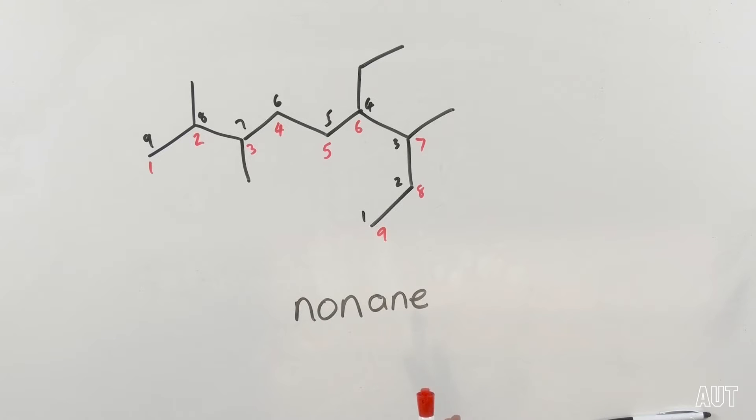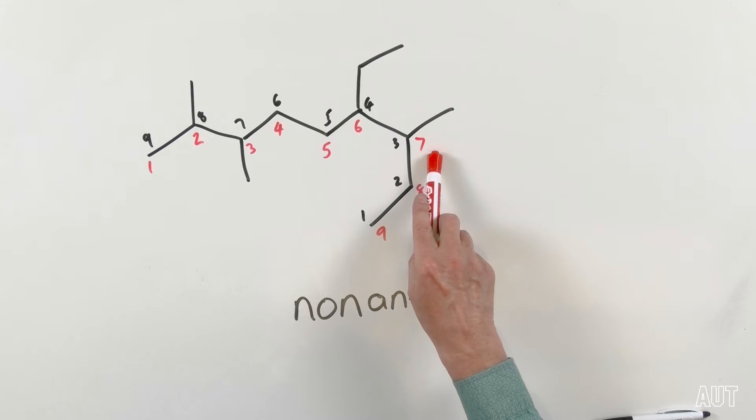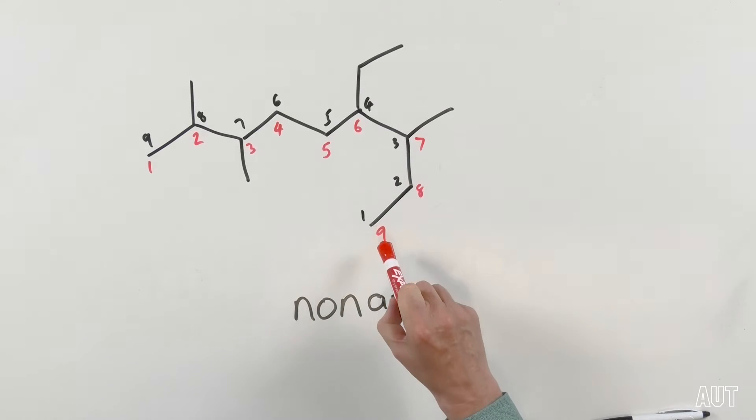So what we need to do is to give them the lowest cumulative numbers in this case. If we number in red, we're going to have a 2, a 3, a 6 and a 7. If we number in black, we're going to have a 3 and a 4 and a 7 and an 8. You can see hopefully that 2, 3, 6, and 7 beat 3, 4, 7, and 8. So we're going to use the red numbering.